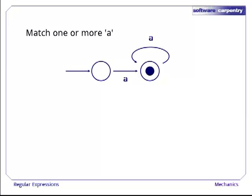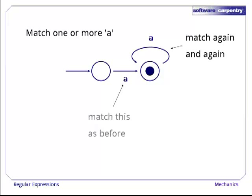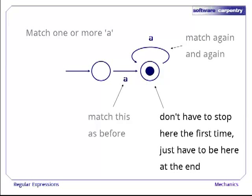Here's a finite state machine that matches one a followed by zero or more a's. The first a gets us from the initial state to an end state, but we don't have to stop there. The curved arc at the top allows us to match another a and brings us back to the same state. We can then match another a and another a and so on indefinitely. Note that we don't have to stop in the end state the first time we reach it. We just have to be in the end state when we run out of input.